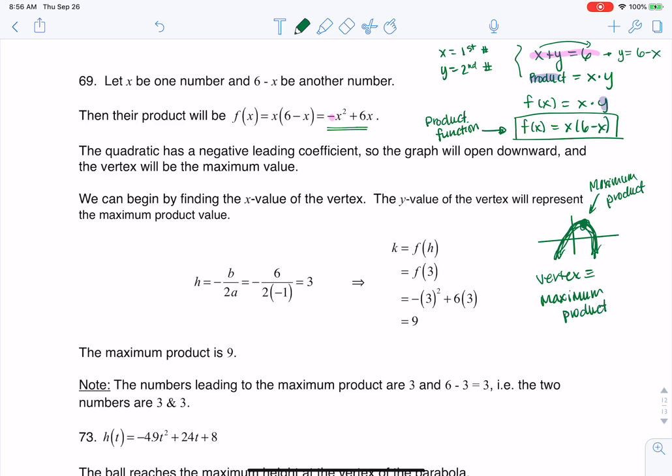I can find the vertex with that formula, negative b over 2a. I get that the h value would be 3. When I plug that back into the function, I get 9.